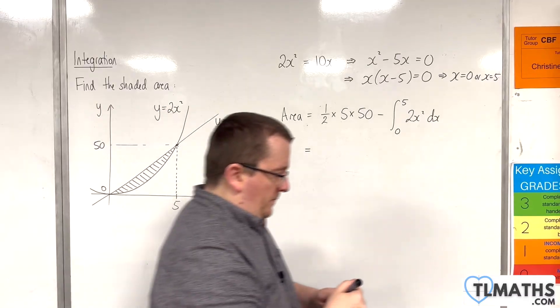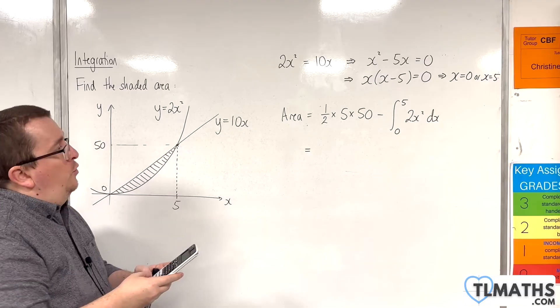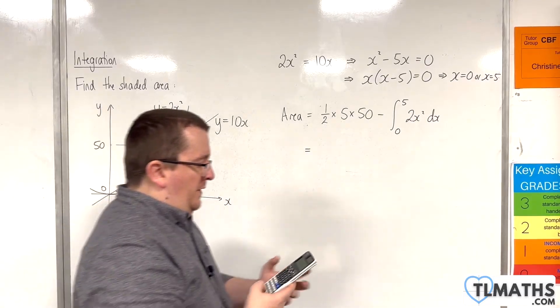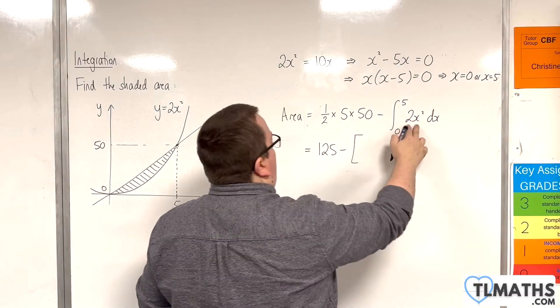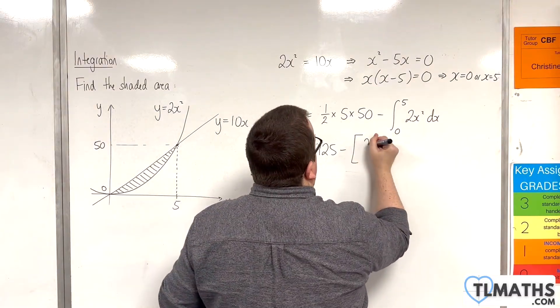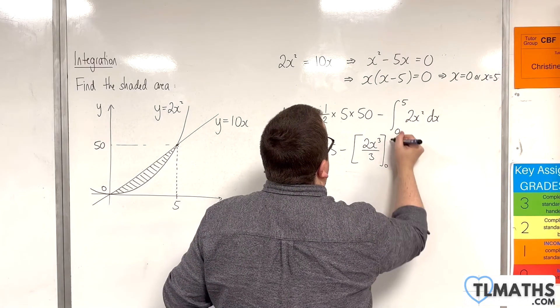Okay, so we have 0.5 times 5 times 50. So 125 take away. Now add 1 to the power divided by the new power. So 2x cubed over 3 evaluated between 0 and 5.